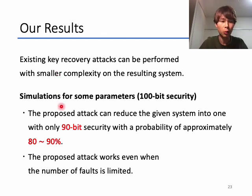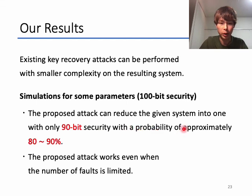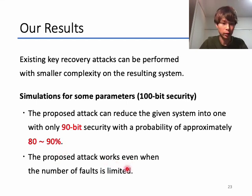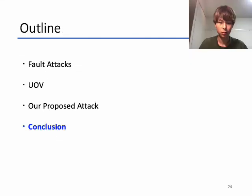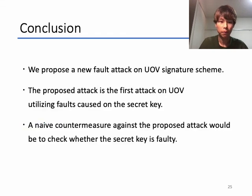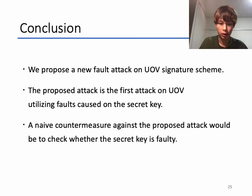We can then perform existing key recovery attacks on the resulting smaller public key system with smaller complexity than the original. Simulations confirmed that the proposed attack can reduce the given system to one with only 90-bit security with approximately 80 to 90% probability, and the attack works even when the number of faults is limited. In conclusion, we proposed a new fault attack on the UOV signature scheme — the first fault attack on UOV utilizing faults on the secret key. A naive countermeasure would be to check whether the secret key is faulty before generating a signature. Thank you for listening.